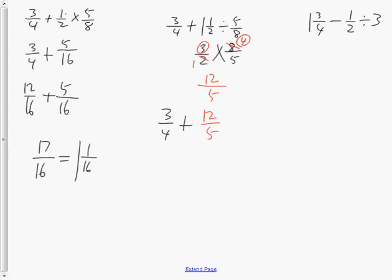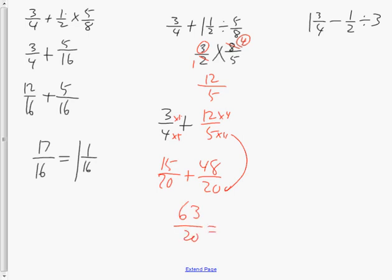Now I need to add 3 quarters plus 12 fifths, requiring a common denominator. Multiplying to get 20: 15 twentieths plus 48 twentieths. When you add those together, you get 63 twentieths, which as a mixed fraction is 3 and 3 twentieths.